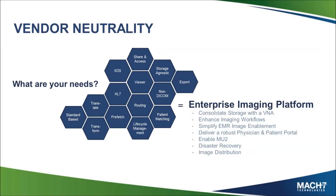From a vendor-neutrality perspective, having the capabilities to do some workflow — specifically around routing and prefetching — is important. Vendor-neutral archives should be able to communicate images to different devices cleanly, and as they communicate those through routing or prefetching, be able to do it along with translation and transformation.